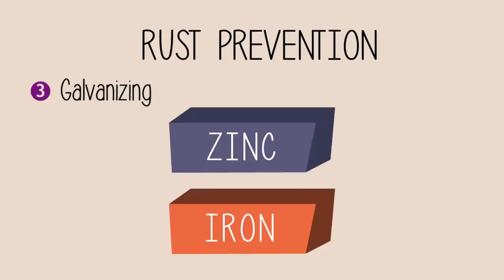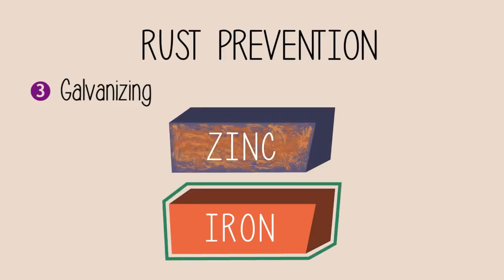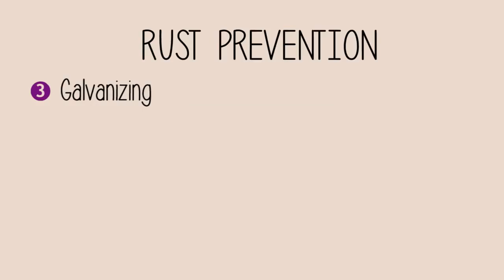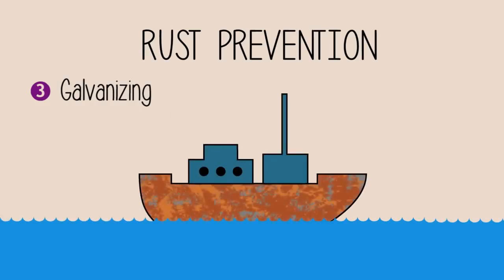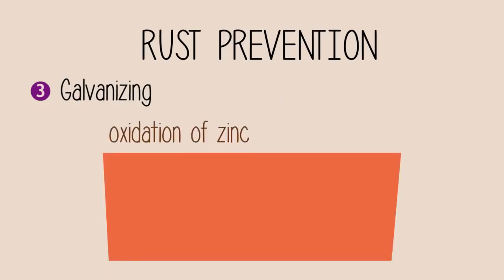So if we put them together, zinc protects iron but is sacrificing itself, hence the term sacrificial protection. This method is applied to prevent rusting on ships. The oxidation of zinc can be described using this following equation.